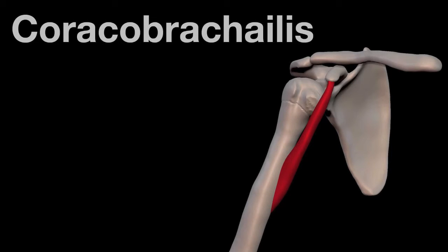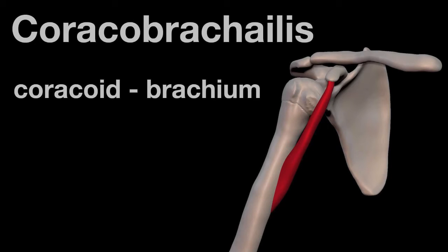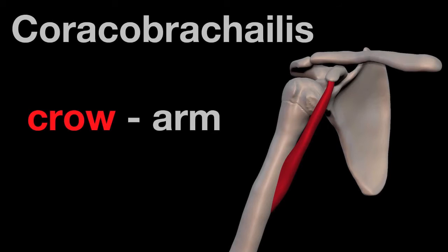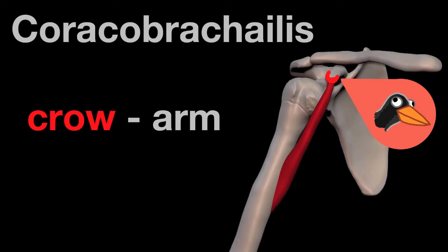Coracobrachialis gets its name from a combination of coracoid and brachium. If you'll remember, coracoid was the thing that was shaped like a crow on the scapula, and brachium means arm, and these are the two places that it attaches.